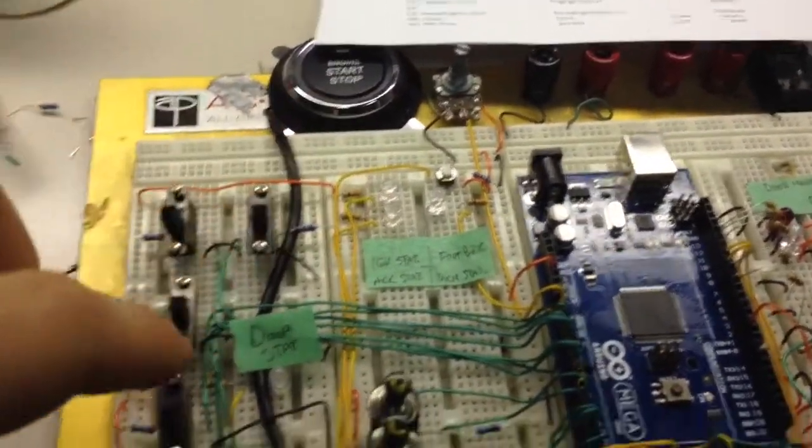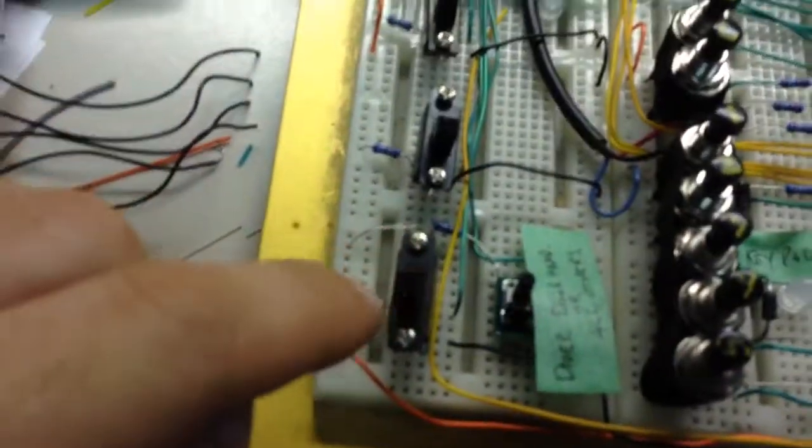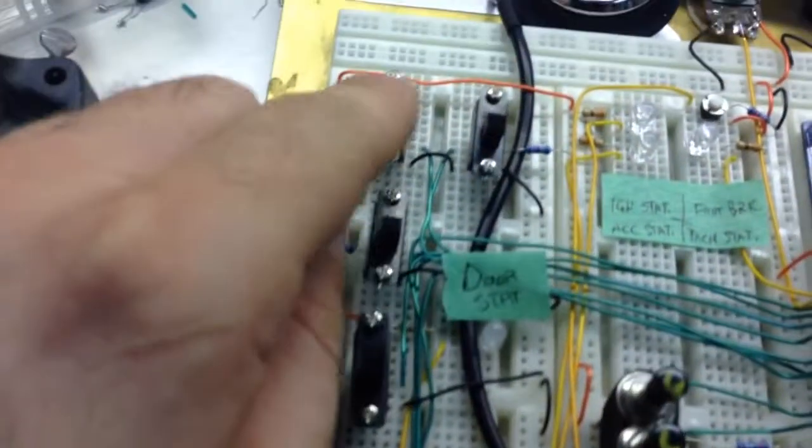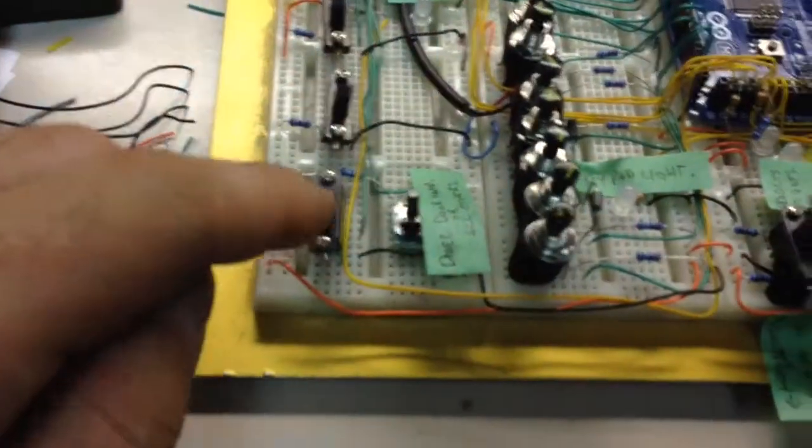We have all kinds of indicators which are going to tell us what's going on. These are all my doors on the vehicle: trunk, hood, and then four doors.